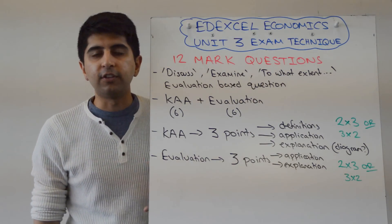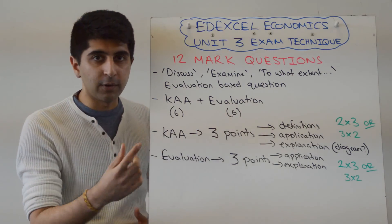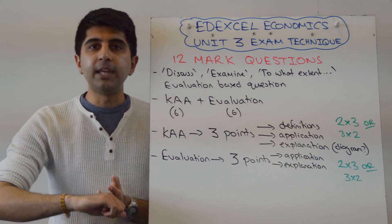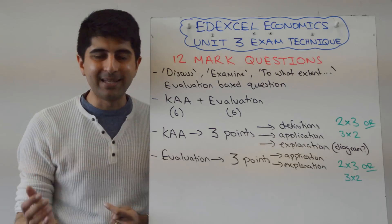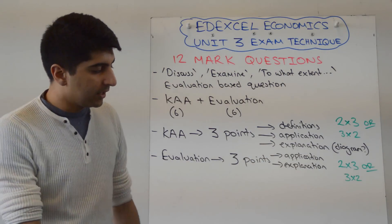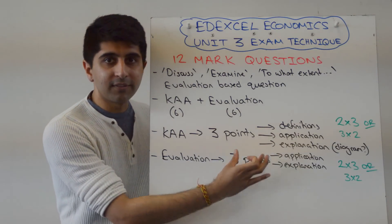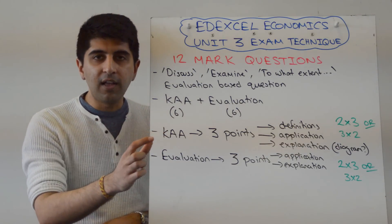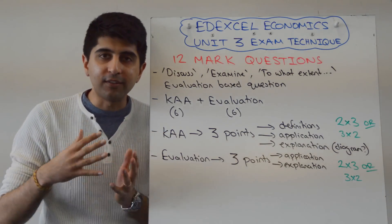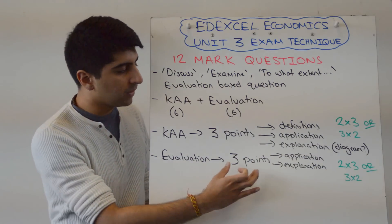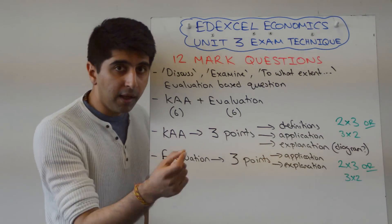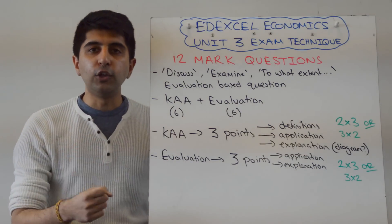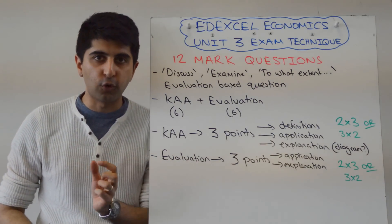You're then looking for evaluation — six marks available for your evaluation points. Remember, that could be limitations of your CAR theory on the one hand. It could be what your theory on the one hand depends on. So again, you're looking for three points, same technique. Three points, on average two marks per point, which means if you flunk one but you do two of them really well, you can still get your marks. Look to apply in each point again — you'll get marks for that. Look to explain your evaluation points and you can score your marks.